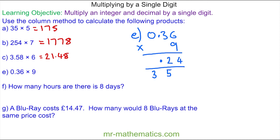And 0 times 9 is 0. Add the 3 which is 3 units. So 3.24.